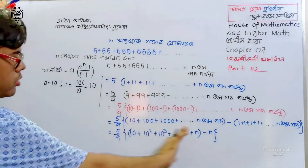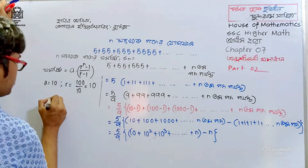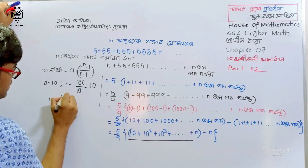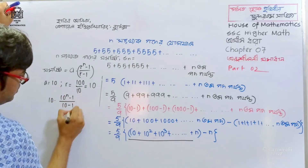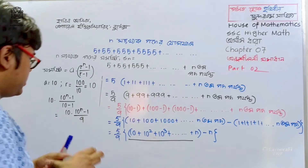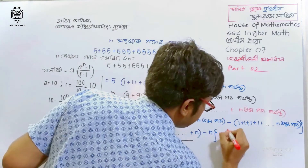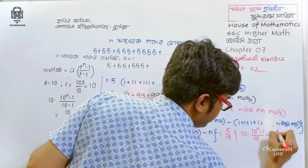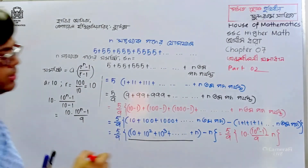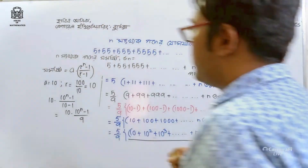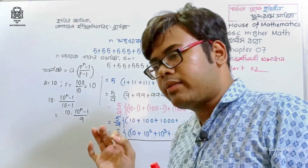That's fine. This is how we write this: 10 into 10 to the power n minus 1, then 10 minus 1. That means: 10 into 10 to the power n minus 1, divided by 9. This is how we write the answer: 5 by 9 times [10 into 10 to the power n minus 1, divided by 9, minus n]. We write this method first, then we learn the shortcut.